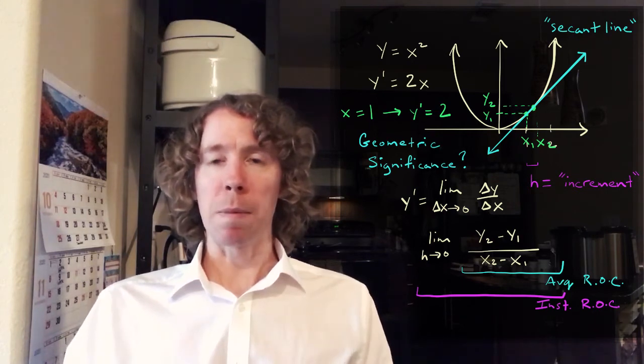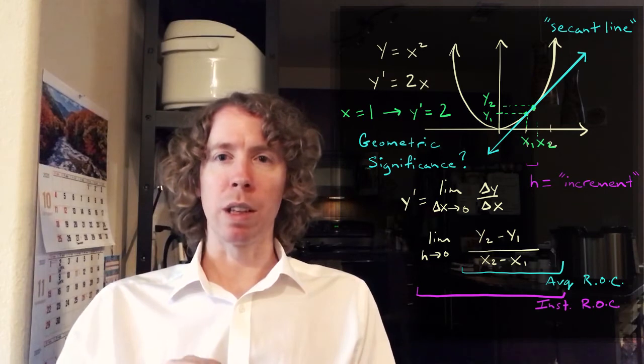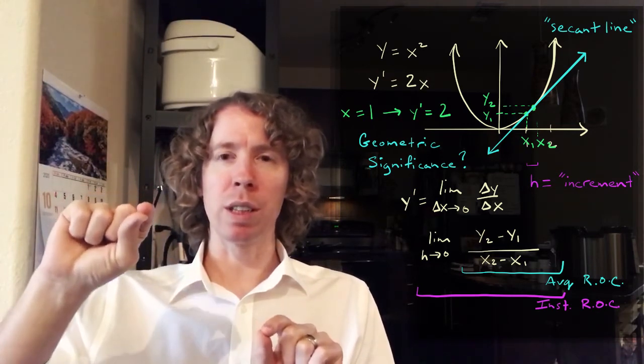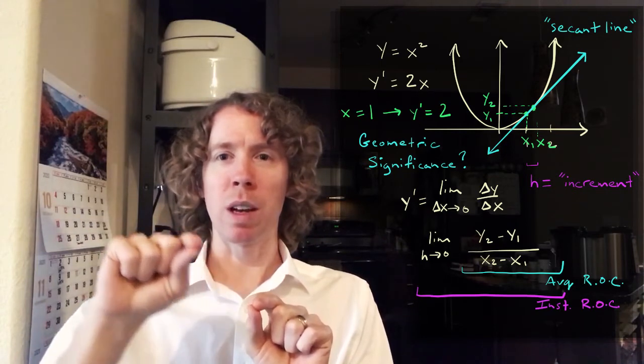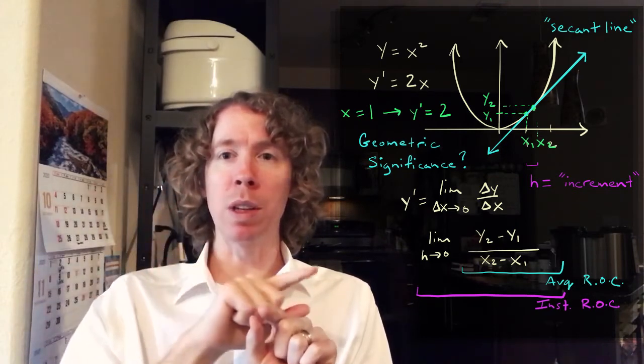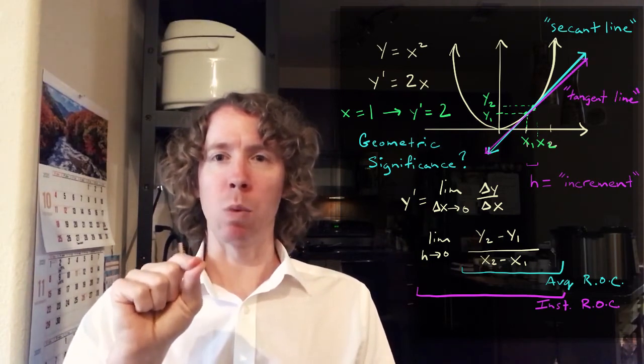So if I take the limit as H goes to zero, geometrically that secant line, you can see it's swinging down to something else. It's swinging down to a line that only touches the curve at one point at the single point X1.